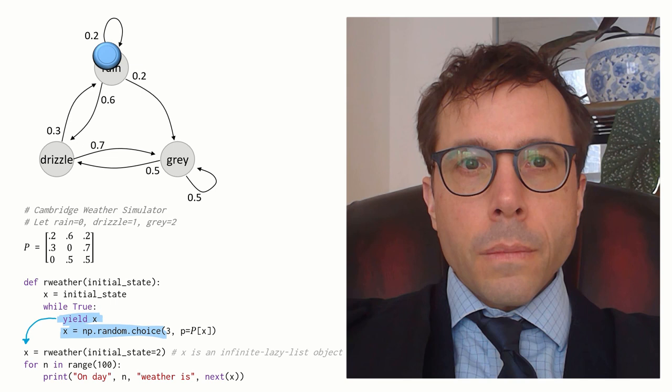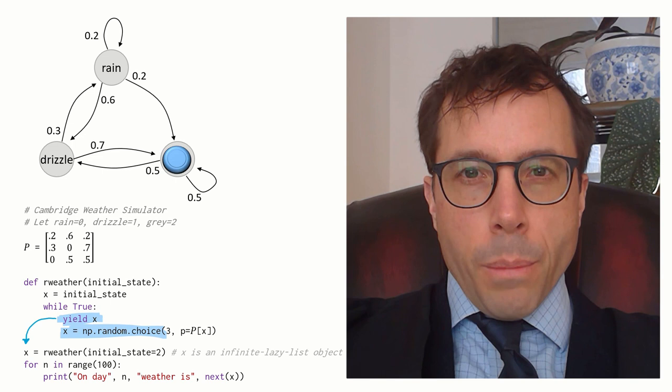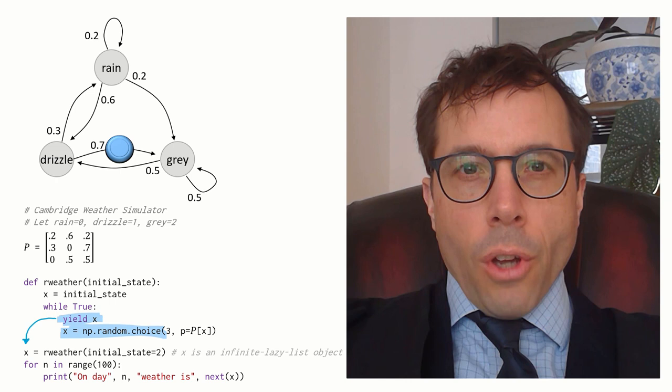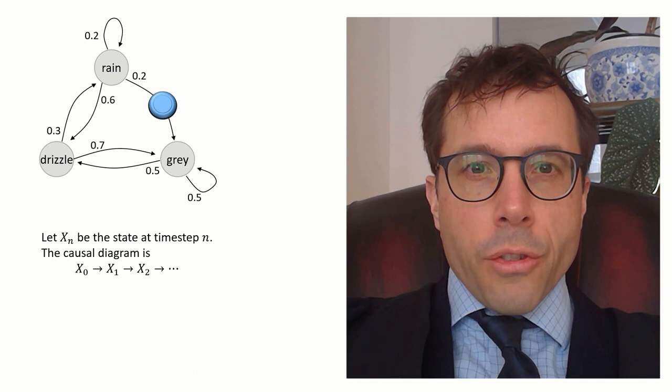A model like this is called a Markov chain. The essential feature of a Markov chain is that each value in the sequence is generated based only on the preceding value.